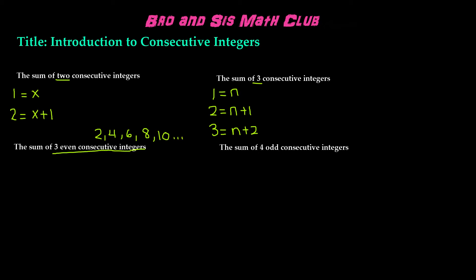As you can see, there's a gap of 2 between these even numbers. So 2 plus 2 is 4, 4 plus 2 is 6, 6 plus 2 is 8, and 8 plus 2 is 10, and so forth. Therefore, when we set up our first, second, and third consecutive integers, they will have a gap of 2 as well.